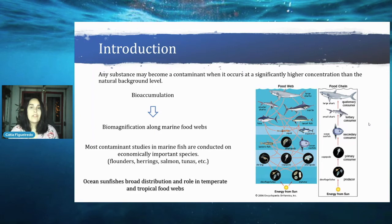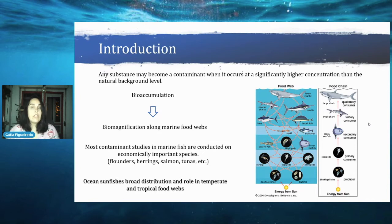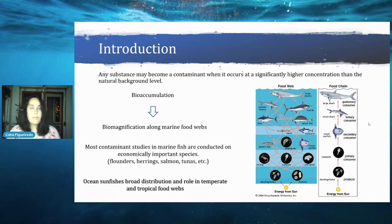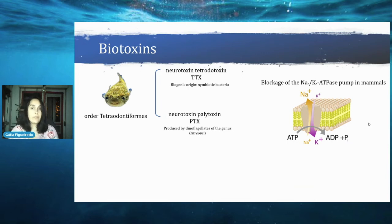Contaminants may be bioaccumulated, and some have the potential to be biomagnified along marine food webs, meaning top predators can contain contaminants several orders of magnitude greater than those found at lower trophic levels. Owing to public health concerns, most contaminant studies are conducted on economically important species, so some fishes have received considerably less attention. However, they are far from less important due to their broad worldwide distribution and key role in food webs. We reviewed all available information on three types of contaminants: biotoxins, trace elements, and microplastics.